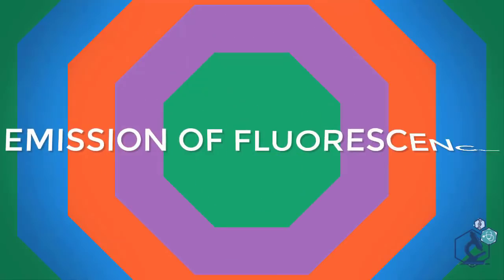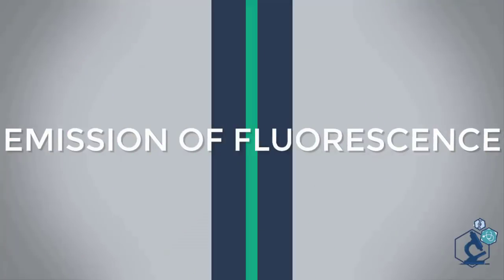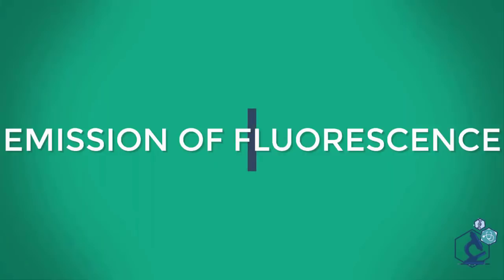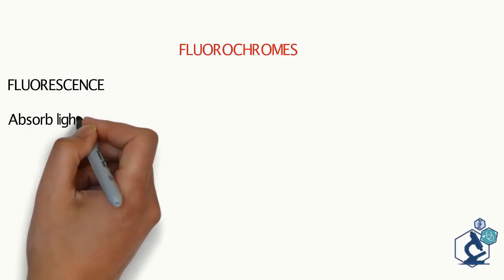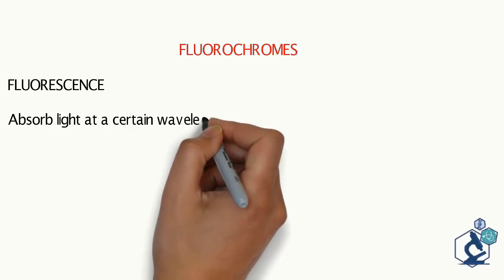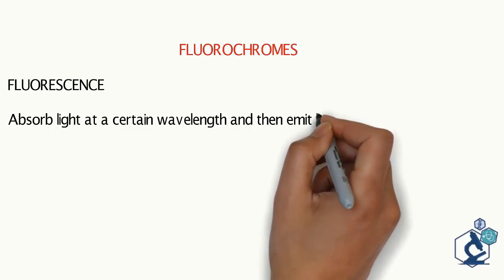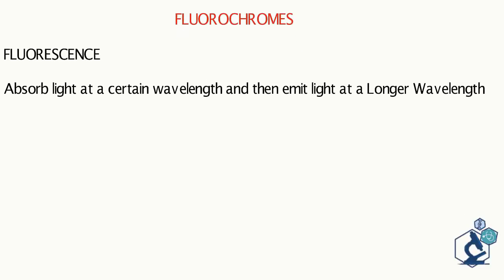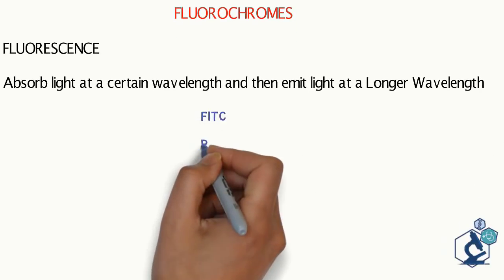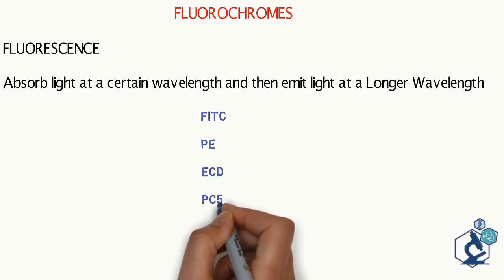Fluorescence. A flow cytometer can also detect emitted fluorescent light from excited fluorescent molecules. Fluorescence is the property of certain substances by which they absorb light at a certain wavelength and then emit light at a longer wavelength. These substances are called fluorochromes. FITC, PE, ECD, PC5, APC, PERCP are the common fluorochromes which are used in flow cytometry.